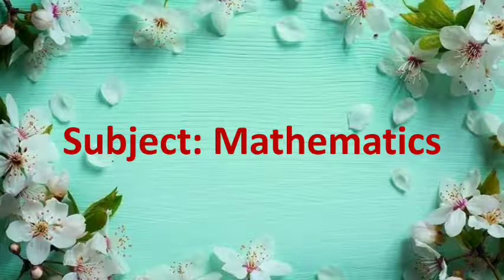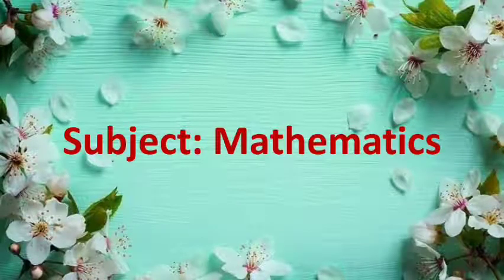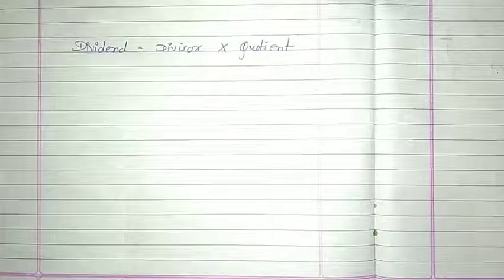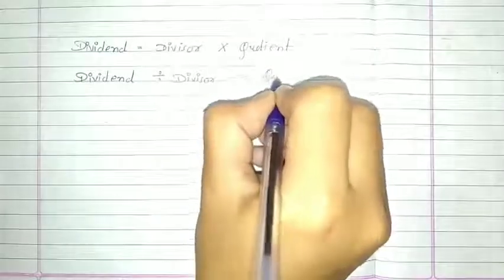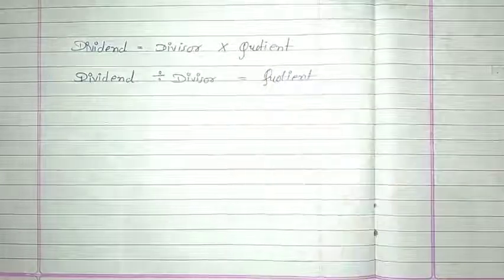Today's subject is mathematics. So yesterday we learnt about this formula: Dividend is equal to divisor multiplied by quotient. आपको ये formula भी याद रखना है और dividend divided by divisor is equal to quotient. ये भी आपको याद रखना है.